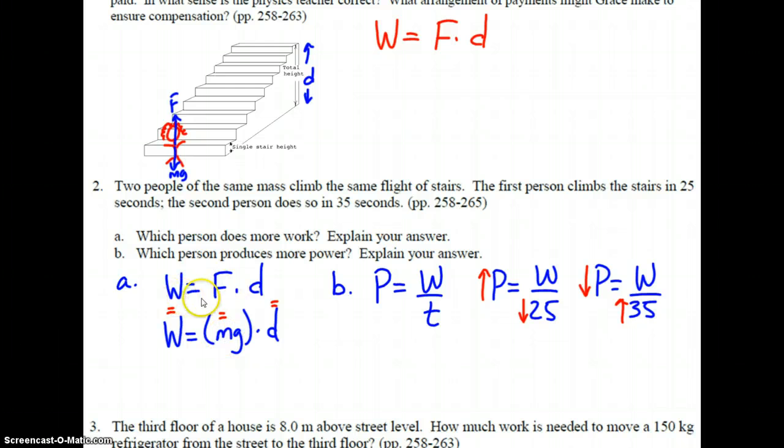Well, the answer to A, again, W equals F times D. The force that's applied is mg. The force applied to overcome the person's weight to get to the top of the stairs. And again, just like in this diagram up here, D is the vertical height of the stairs. Well, if they have the same mass, their m's are equal. If it's the same flight of stairs, their d values are equal. And g is a constant. So mg times D means they both do the same amount of work.